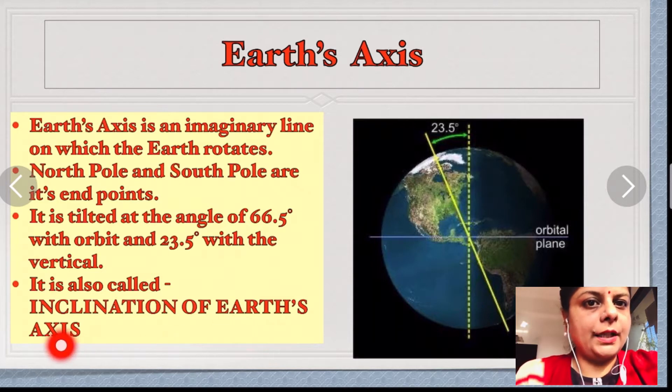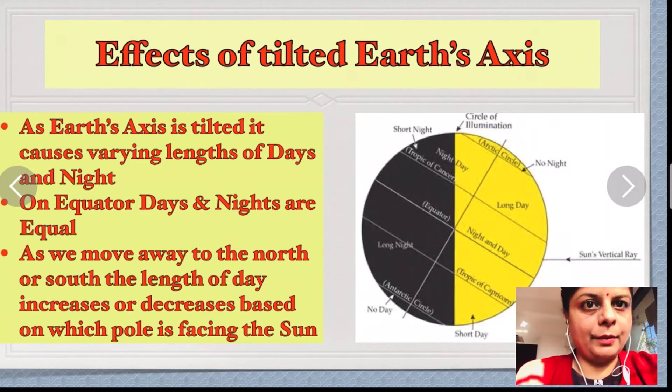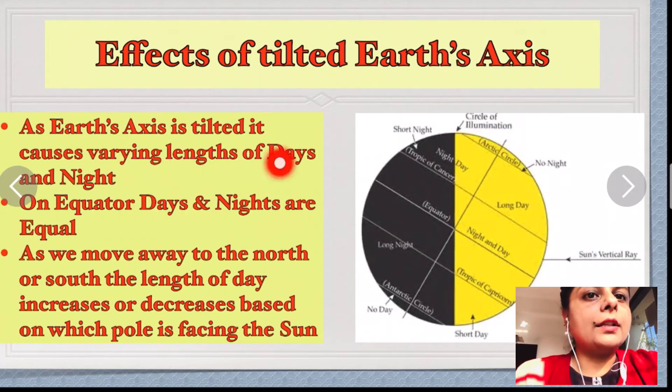What are the effects of Earth's tilted axis? Number one: as Earth's axis is tilted, it causes varying length of days and nights, meaning the days and nights all over the world are not of equal length.